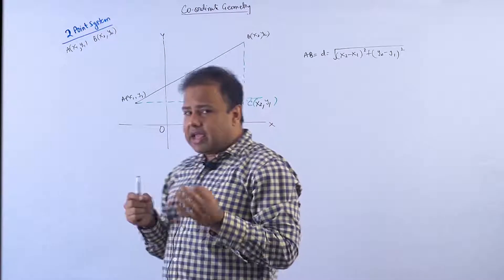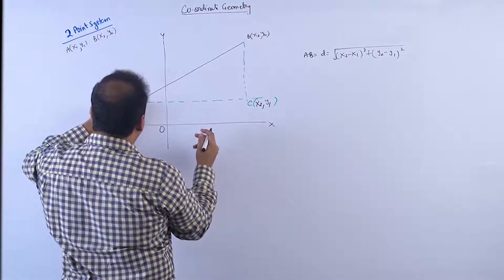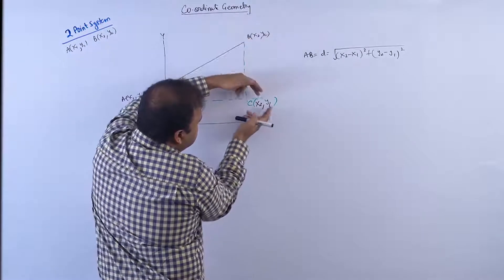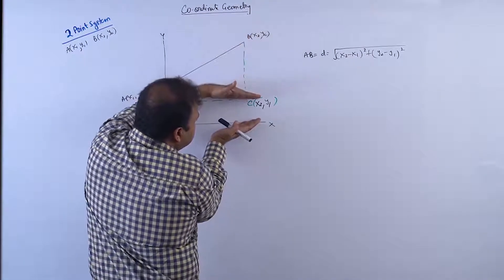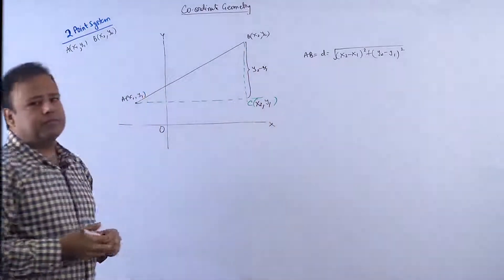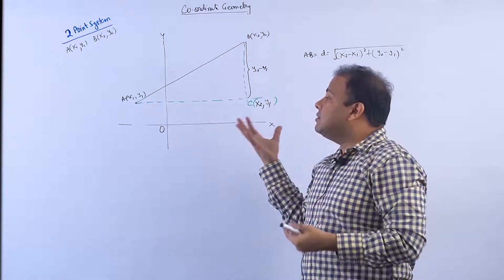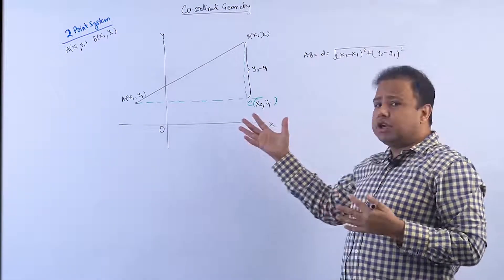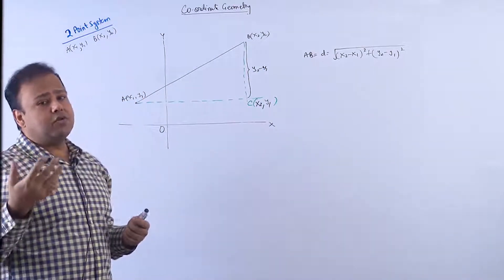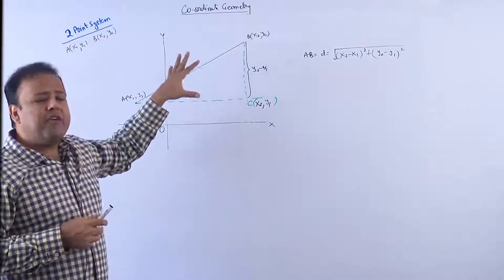So, if the notation is clear, this portion from the x-axis to A is y1, and this portion from the x-axis to B is y2. If this is y2 and this is y1, then the vertical segment BC is y2 minus y1. Take time to understand this — pause the video if needed, because this is the basic foundation of coordinate geometry. If this concept is not understood, you won't be able to solve harder problems.